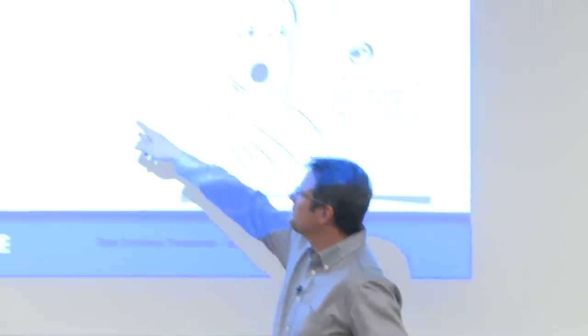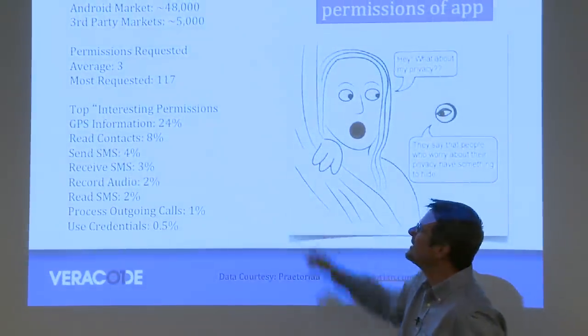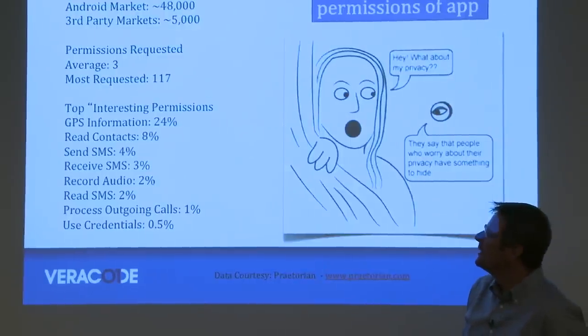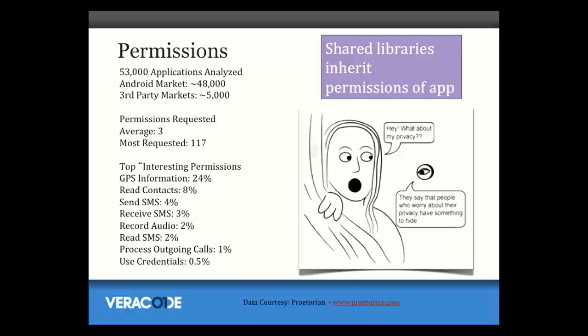If you look at the top interesting permissions: 24% of the 53,000 apps requested GPS information, 8% read the contacts, 4% sent SMS and 3% received SMS, 2% recorded audio, and 1% processed outgoing calls. I don't think 4% of the apps in the app store really need to send SMS text messages — that's a hint that something untoward is going on. 8% of apps needing to read your contacts list is probably not necessary either.